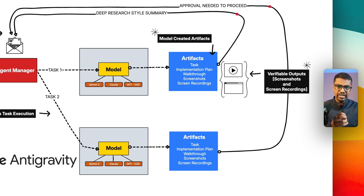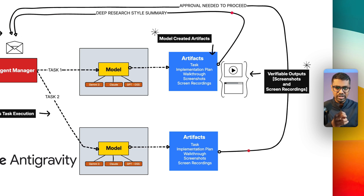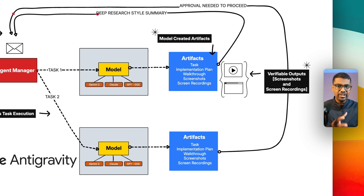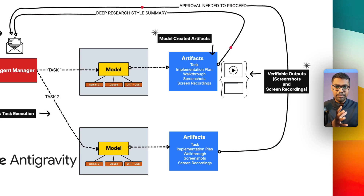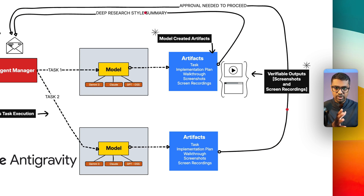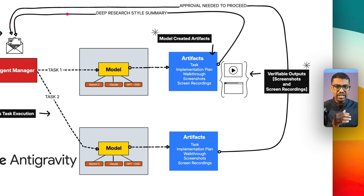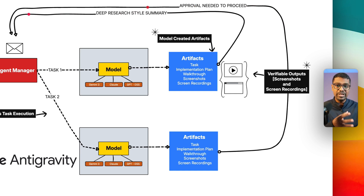Once you give it a task, it creates that particular output but doesn't just leave it there. We've all seen scenarios where a model says it's completed a task but in reality it's not right. What differentiates Antigravity is that using the computer use agent, it's able to browse to that particular feature, verify that the functionality is actually present, and also has access to the DOM. It can also take screen recordings to verify accessibility features.